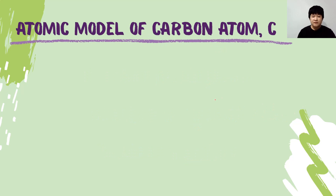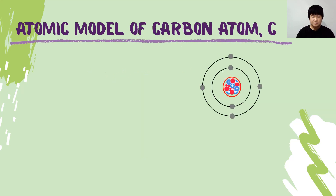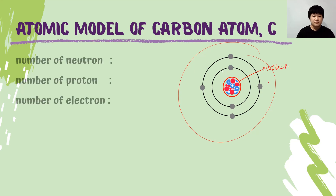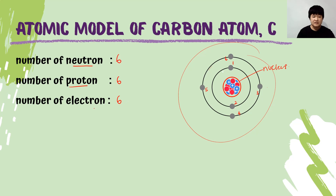The first example on the screen is the carbon atom. This is the atomic model of carbon atom. This is the nucleus of the carbon atom. Inside the nucleus of the carbon atom, we have 6 neutrons and 6 protons. Therefore, the number of neutrons is 6 and the number of protons is 6. The number of electrons is also 6 — you can count 1, 2, 3, 4, 5, 6 surrounding the nucleus.